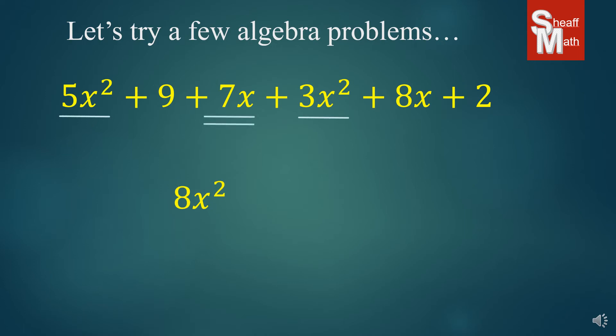Then I locate the x's next. And so seven plus eight is 15x, positive 15x. And then I have positive nine and positive two. And I add those together and I get plus 11. And there it is. That's what we do.